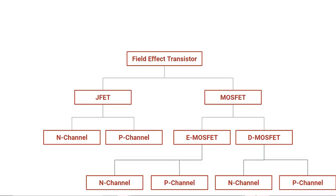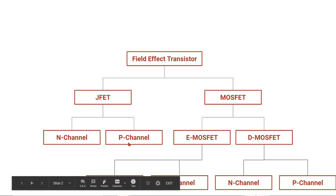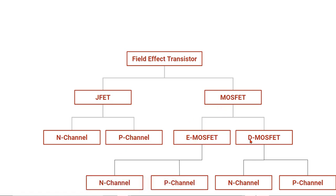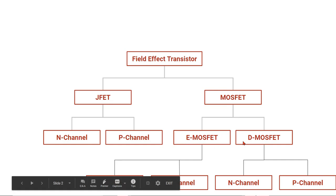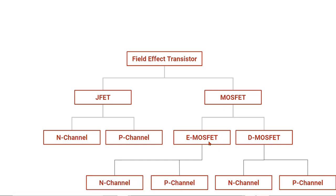Before directly jumping to understand the difference between JFET and MOSFET, let me remind you that both transistors — JFET and MOSFET — are from the family of field effect transistors. JFET has two categories: N-channel JFET and P-channel JFET. Similarly, MOSFET has two categories: E-MOSFET and D-MOSFET, which are enhancement MOSFET and depletion MOSFET, each further divided into N-channel and P-channel types.